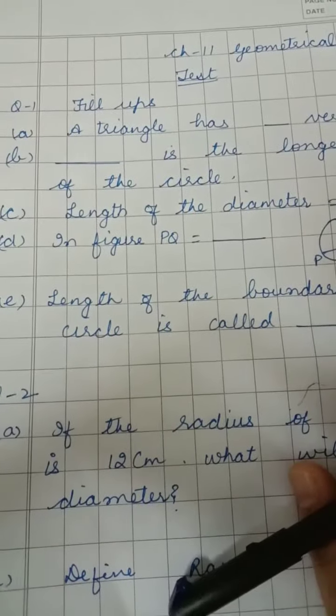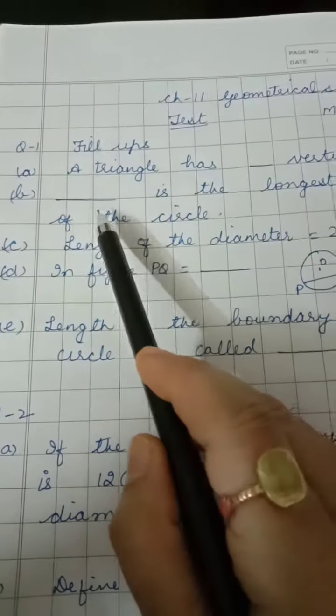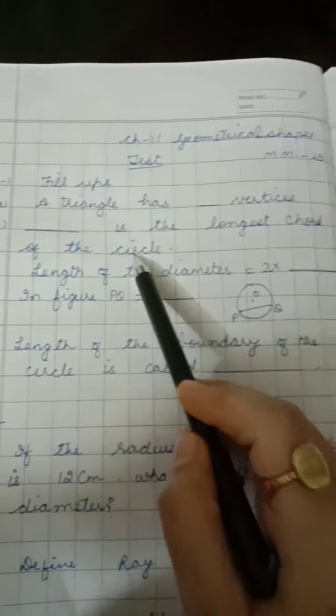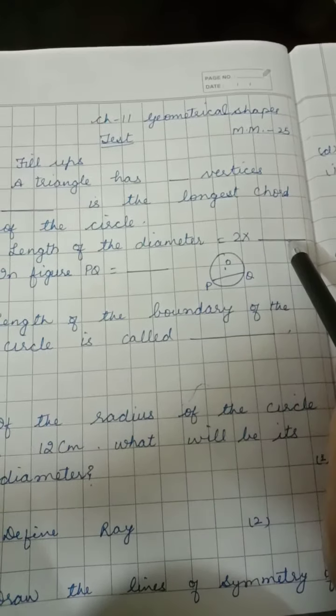First question is fill in the blanks. Part A: Triangle has ___ vertices. B: ___ is the longest chord of the circle. C: Length of the diameter is equal to 2 multiplied by ___.